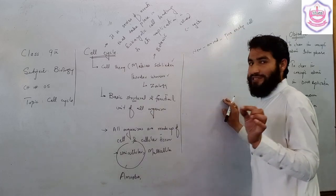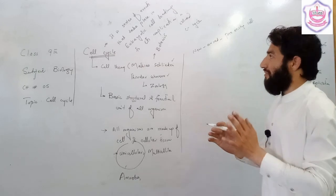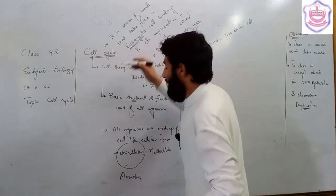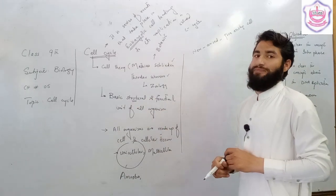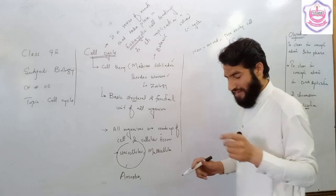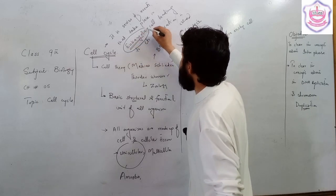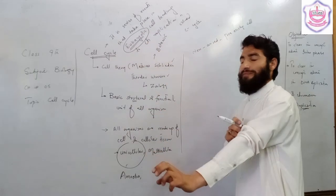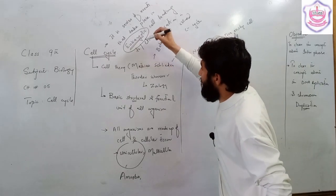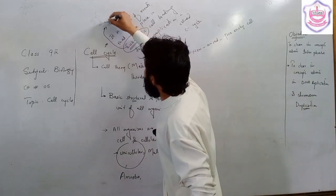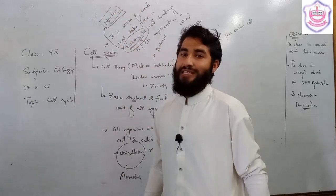The cell cycle is a series of events that take place in eukaryotic cells. So what is a eukaryotic cell? A eukaryotic cell is one which has a proper, well-defined nucleus.